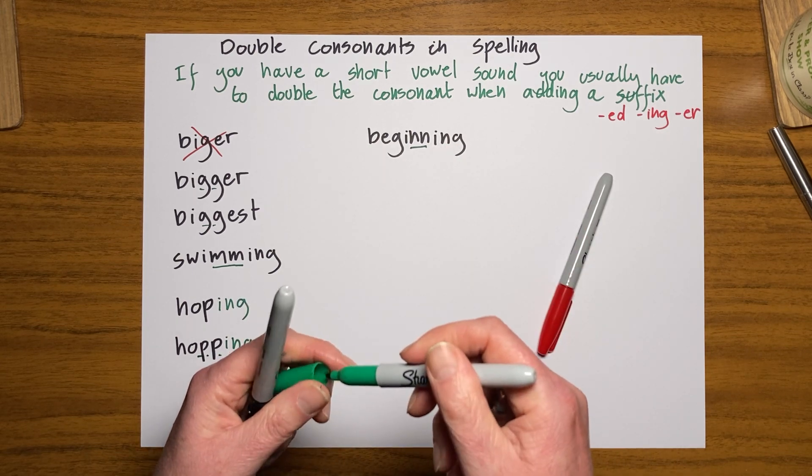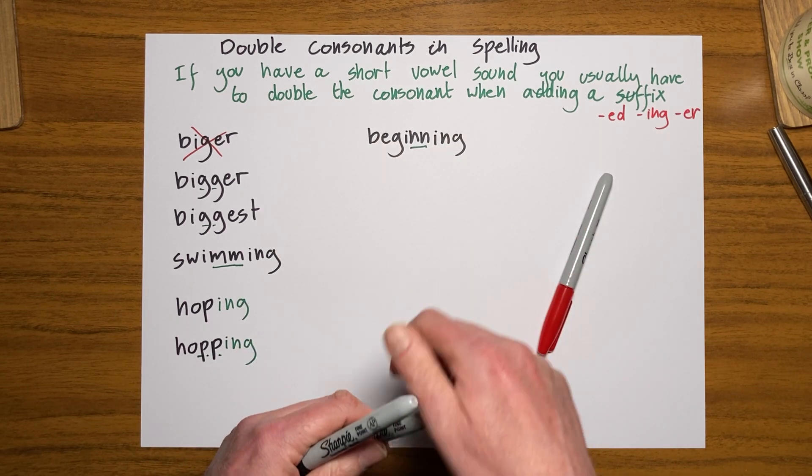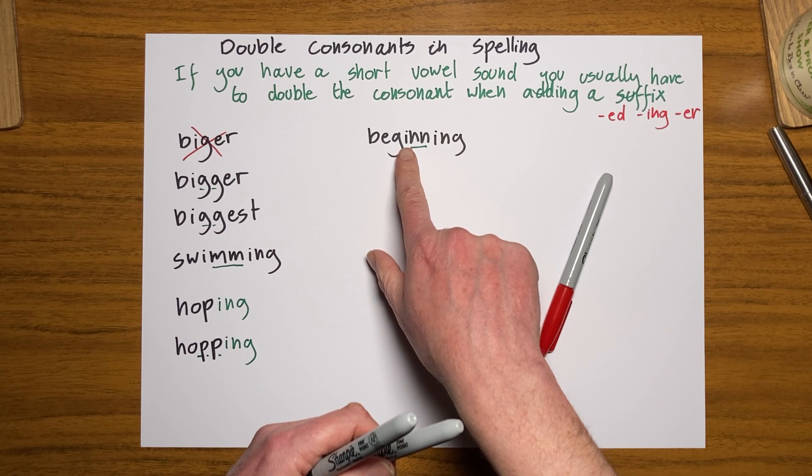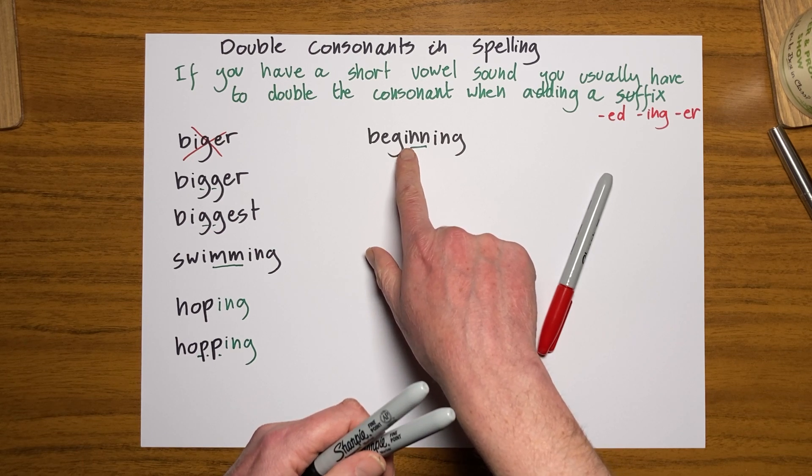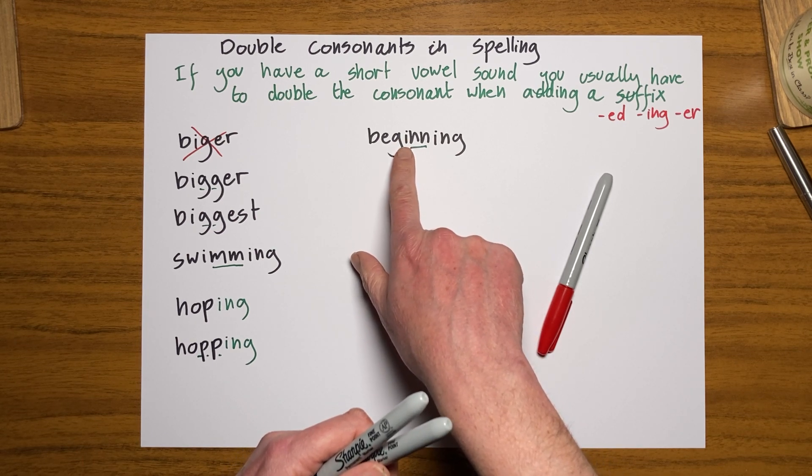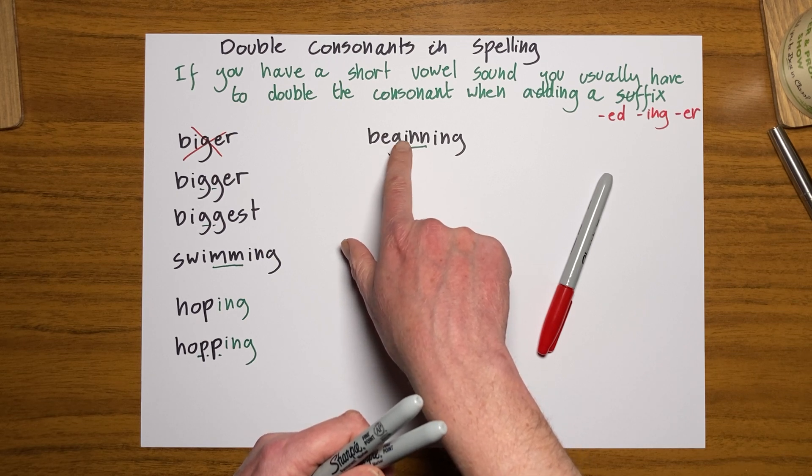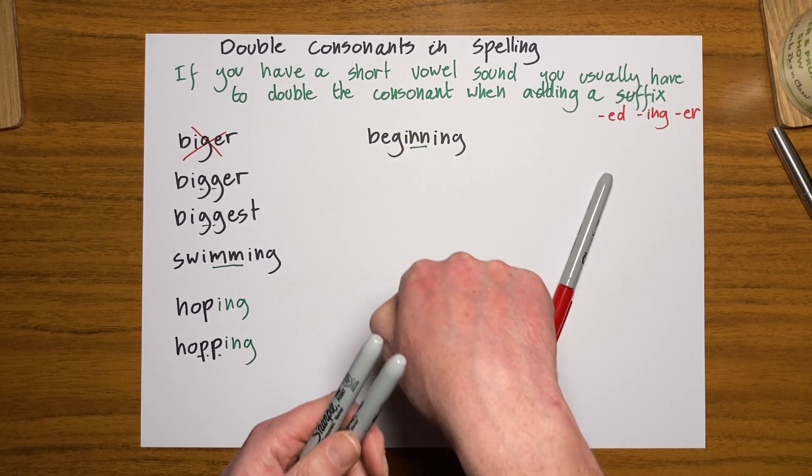So always be careful. Think about what you're doing. Think about what the sound is here, whether that's going to be a short vowel sound like begin. Then I need to double the consonant.